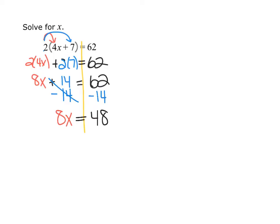And when I do 62 minus 14, I'm going to get an answer of 48. And then finally, I have 8 times x equals 48. So to show how I get my x, I have to divide both sides by how many x's I have. And in this case, I have 8 of them. So I divide both sides by 8 to get x equals 6.